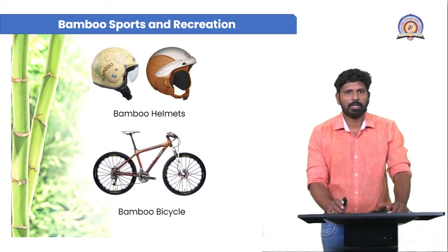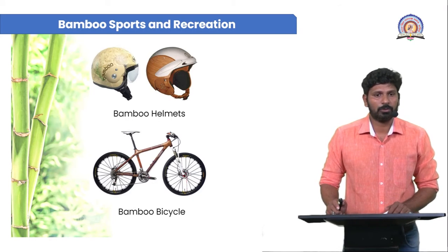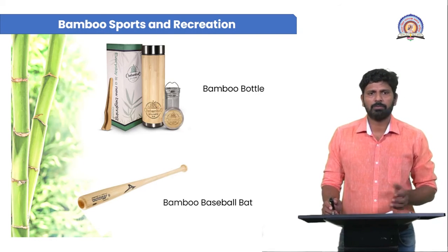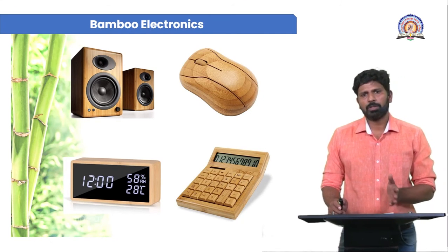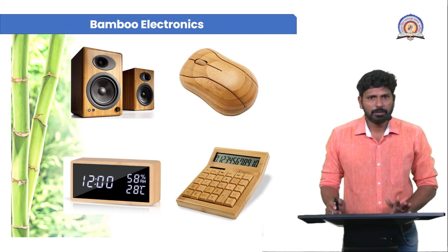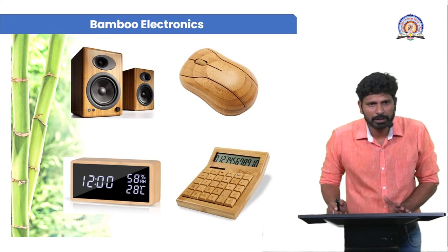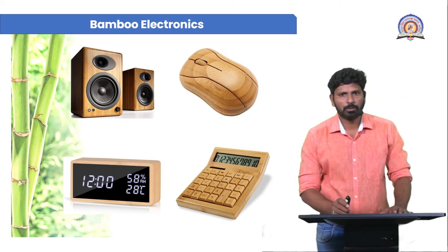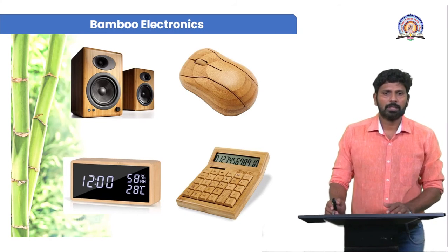Bamboo is used in sport and recreation — bamboo helmets and bamboo bicycles are there, as well as bamboo bottles and bamboo baseball bats. Bamboo is not behind in the IT era either: the outer box of speakers can be prepared from bamboo, there is the bamboo mouse, digital clocks can be made from bamboo, and bamboo is also used to prepare calculators.